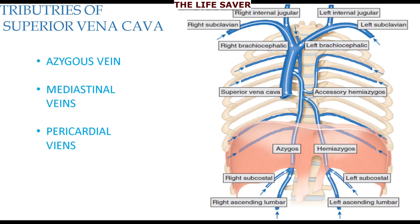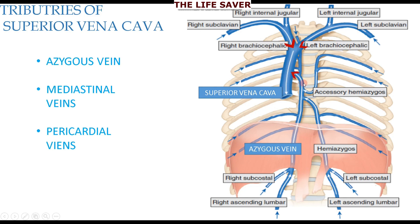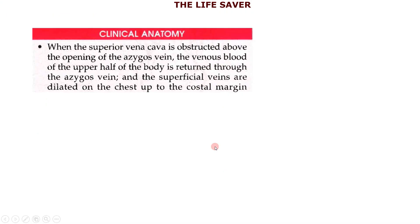Now we are going to discuss the tributaries of the Superior Vena Cava. Tributaries are the veins which carry blood from different parts of the body and drain into the Superior Vena Cava. These are: the azygous vein, the right brachiocephalic vein, the left brachiocephalic vein, the mediastinal veins, and the pericardial veins.